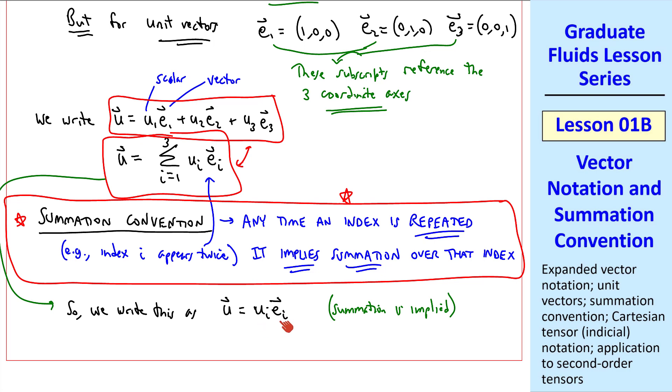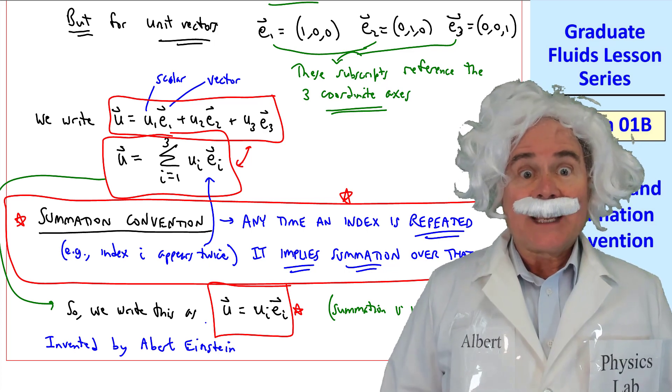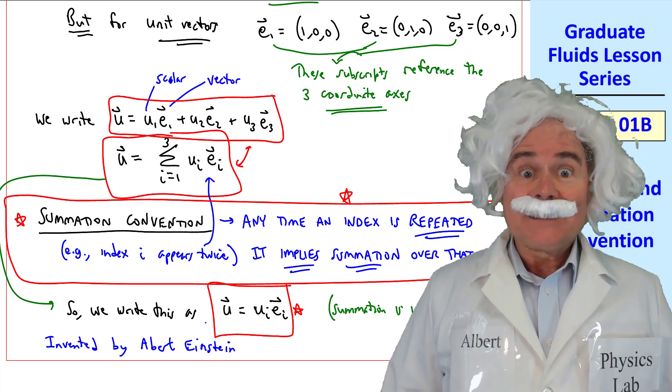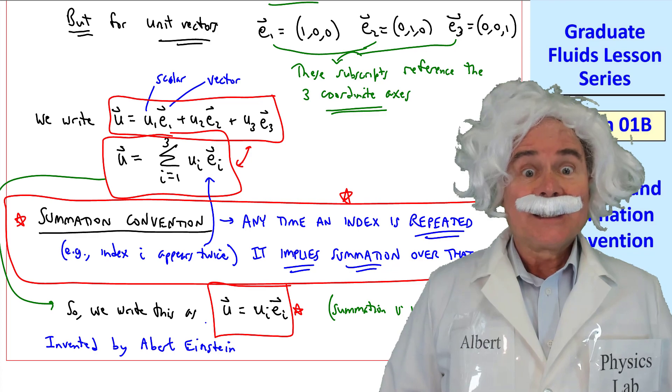From now on, when you see two indices that are repeated, in your mind you should be thinking sigma 1 to 3. This summation convention was invented by Albert Einstein. I am glad to hear that my summation convention is still being used. Thank you, Albert. We appreciate you. Danke.